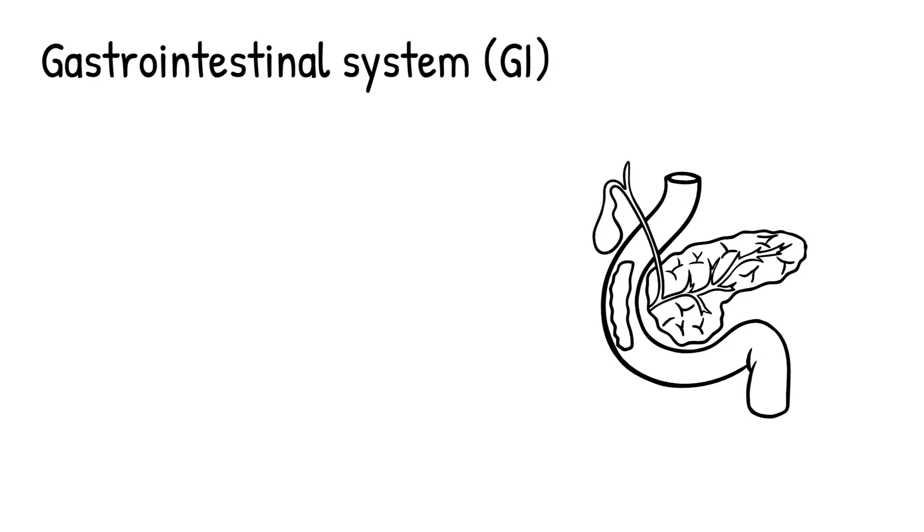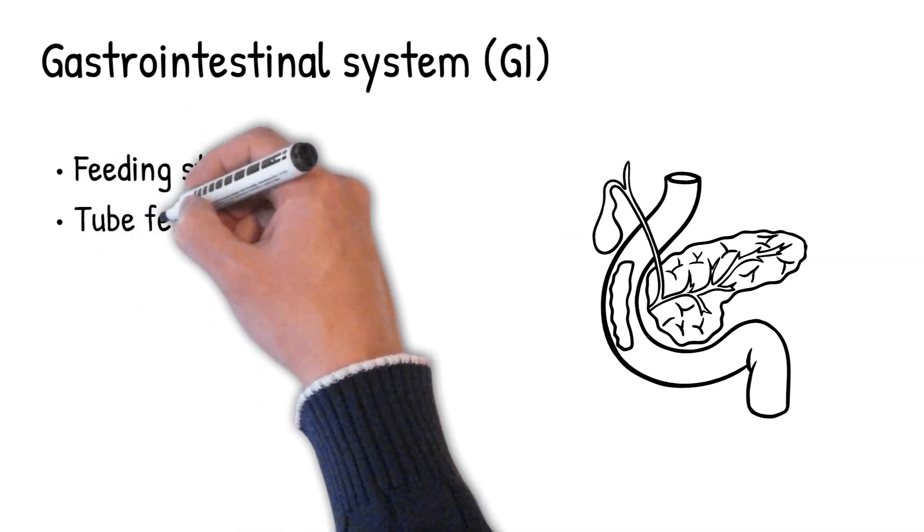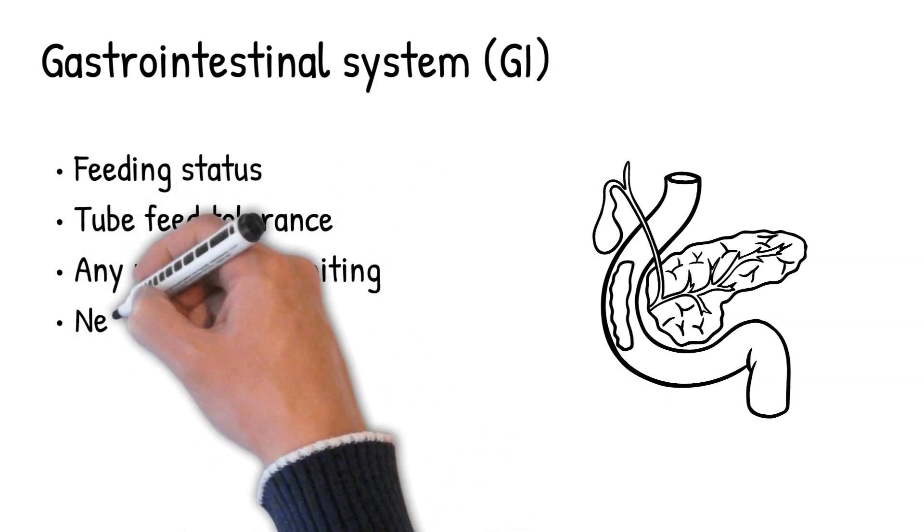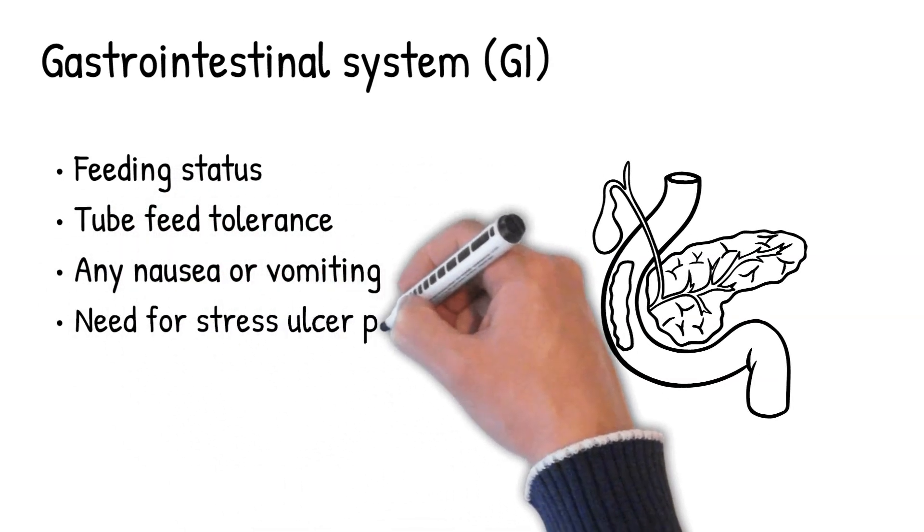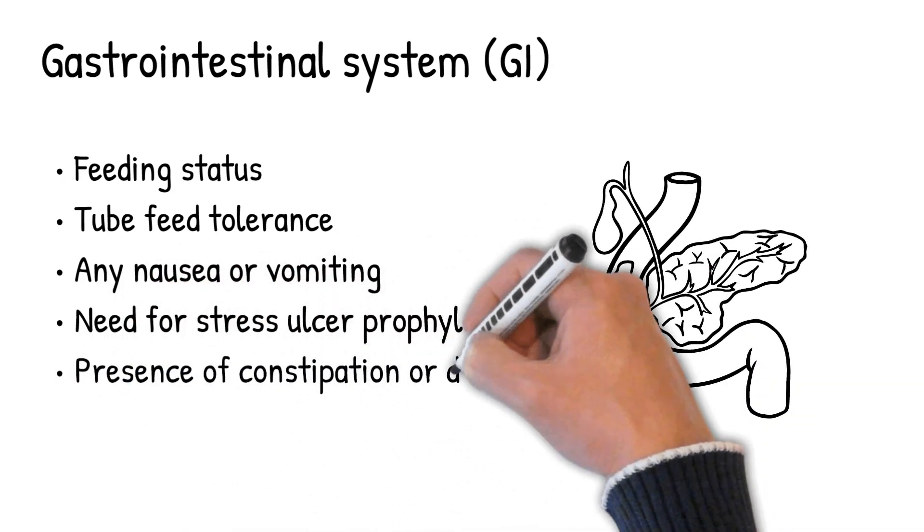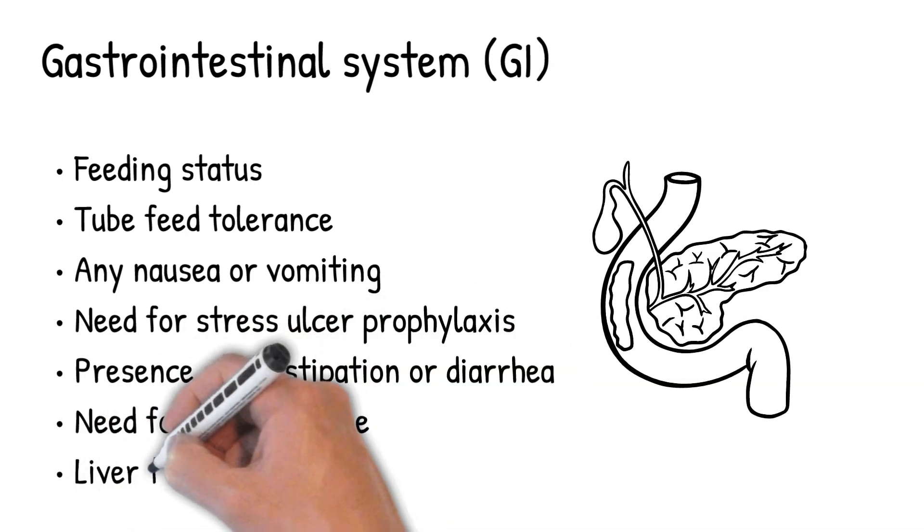Next the gastrointestinal system. Definitely need to check the feeding status of the patient, feed tolerance, any nausea vomiting, need for stress ulcer prophylaxis. Assess presence of constipation, diarrhea, also assess the need for bowel routine and liver function tests.